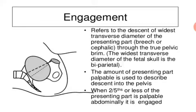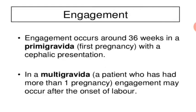Engagement refers to the descent of the widest transverse diameter of the presenting part through the pelvic brim. The amount of presenting part palpable abdominally is used to describe descent into the pelvis. When two-fifths or less of the presenting part is palpable abdominally, the head is engaged. Engagement occurs around 36 weeks in the primigravida with a cephalic presentation, and in multigravidae engagement may occur after the onset of labor.